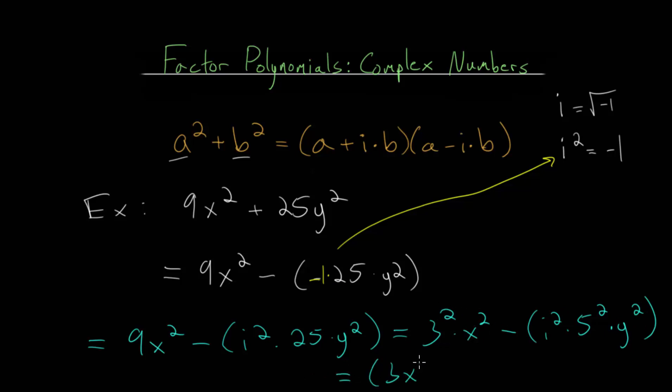we can just rewrite this as 3x squared, since 3x times 3x is 9x squared. And over here we can rewrite this as 5 times y times i all squared. And of course to verify this you can just re-multiply this out, multiply it by itself.